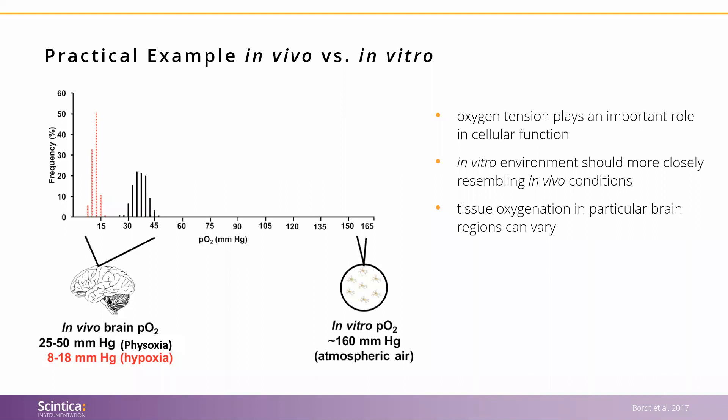What you are seeing in the graph is the number of times under physoxia and hypoxia a given measurement was obtained. Hypoxic tissue, shown in red, generally gives a reading between 8 and 18 millimeters of mercury. Physoxia, shown in black, gives a reading between 25 and 50. The graph is also overlaid with the general partial pressure of oxygen at which most in vitro research is performed — around 160 millimeters of mercury at the benchtop, or about 141 even within an incubator.